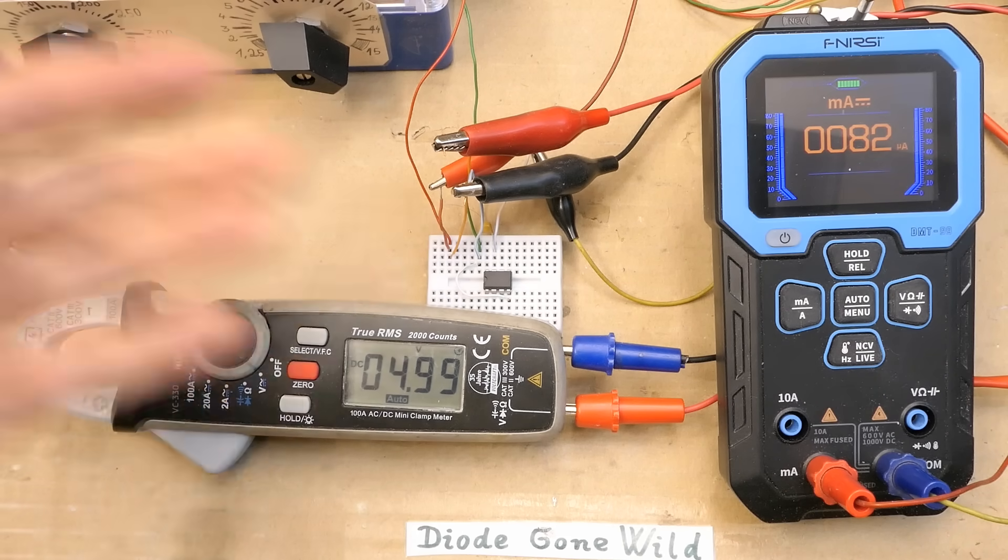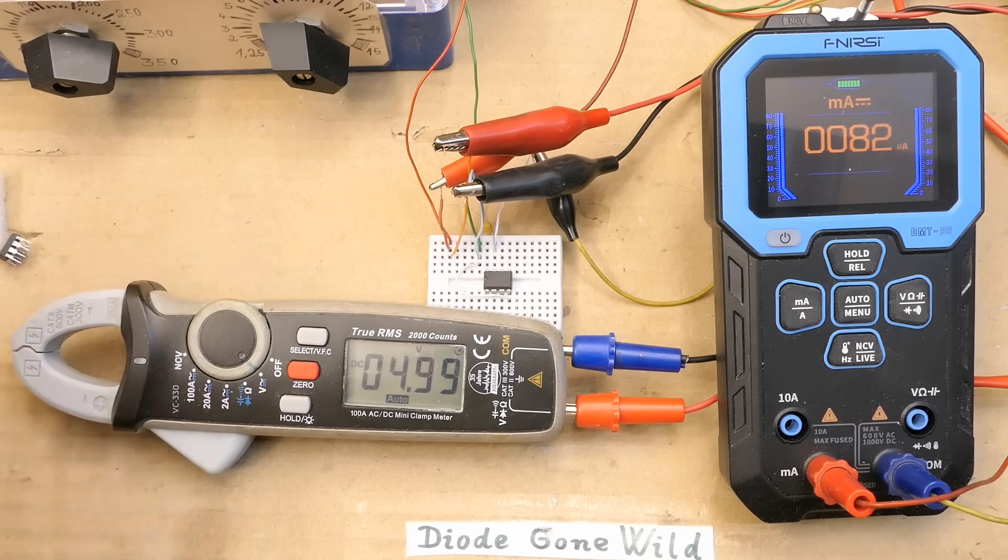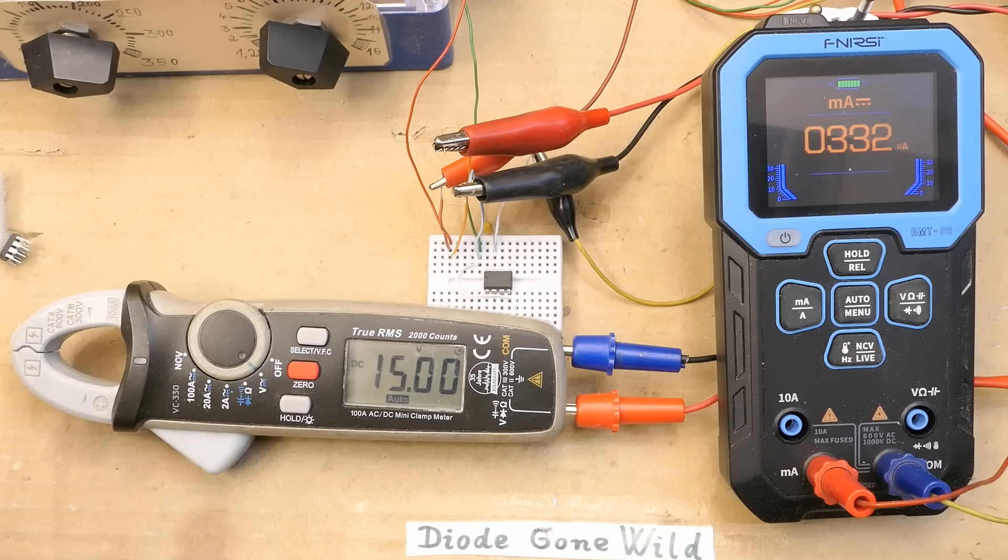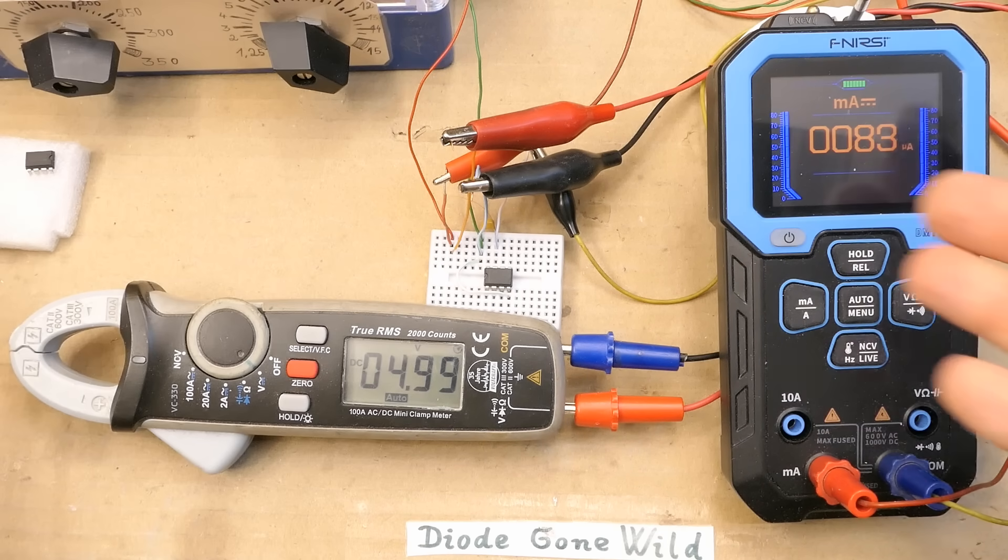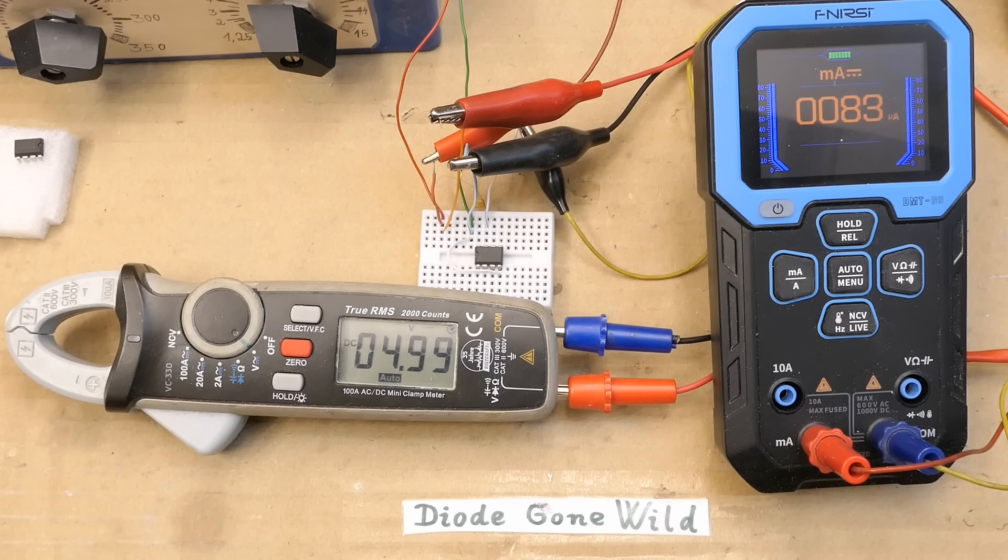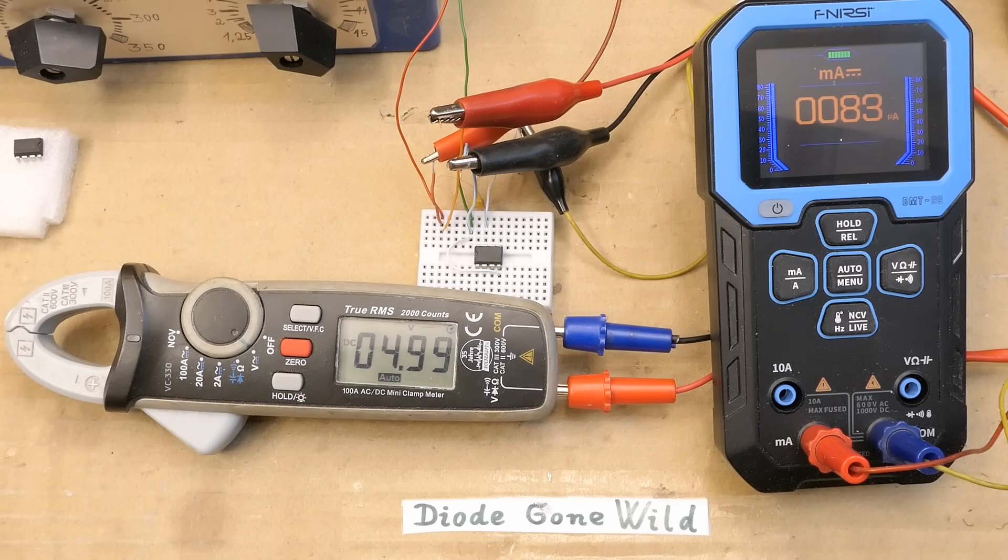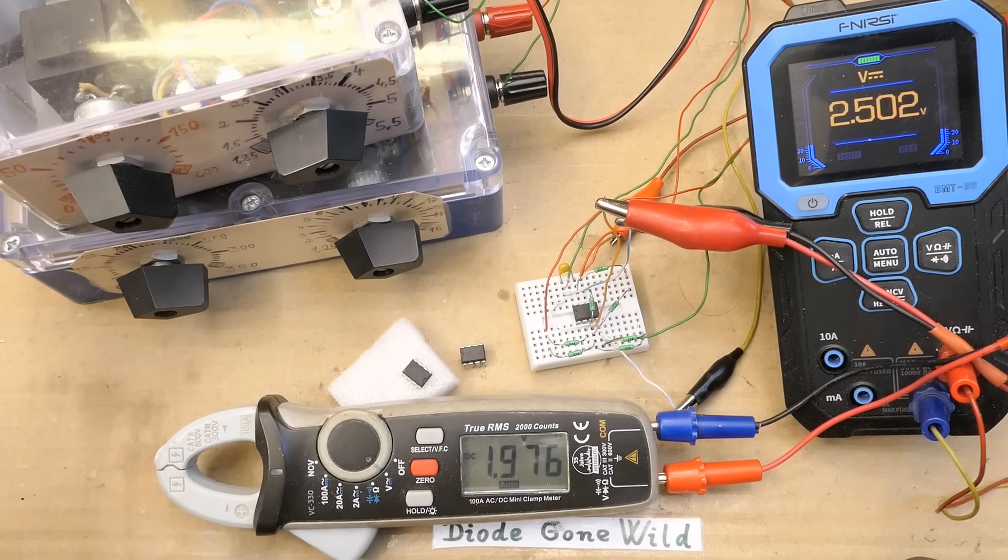Let's not forget about the supply current measurement. At 5 volts 82 microamps. At 15 volts 331 microamps. And the other type exactly the same at 15 volts and also at 5 volts. Another indicator it has to be the same thing. So don't always trust components from eBay.